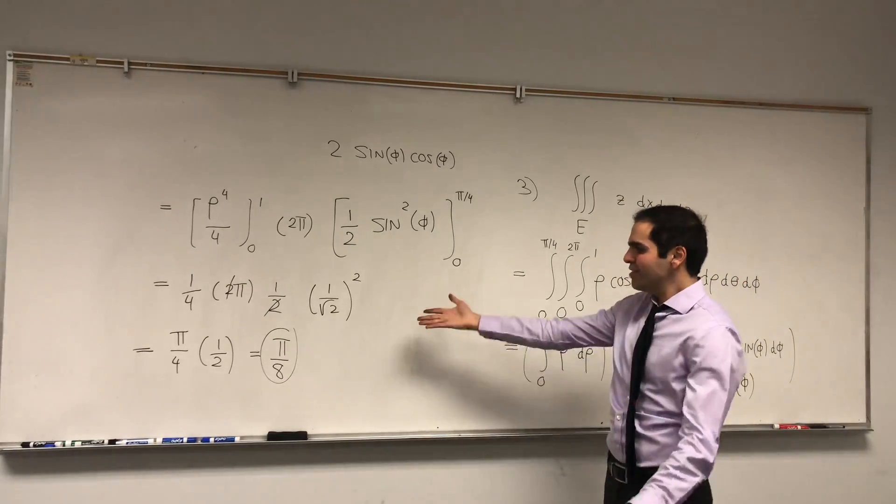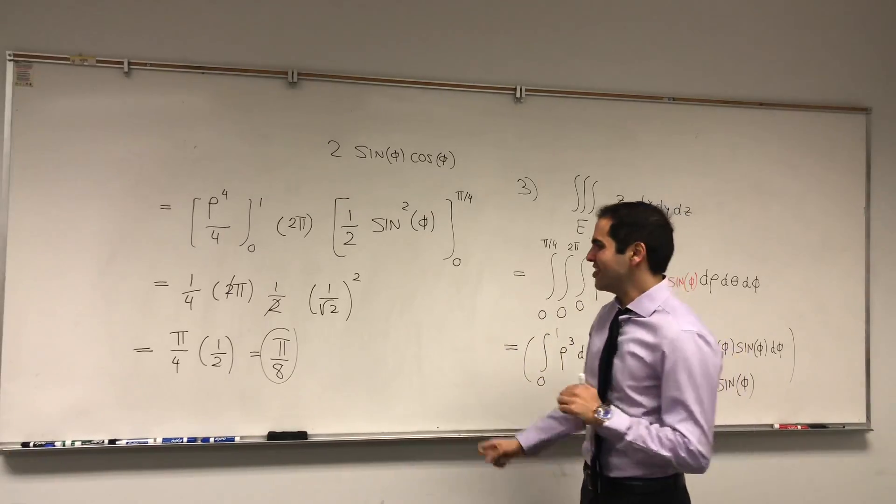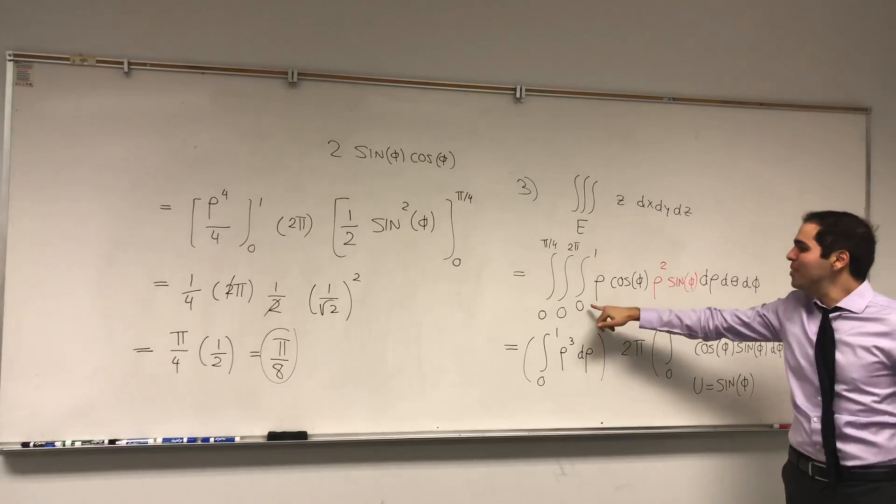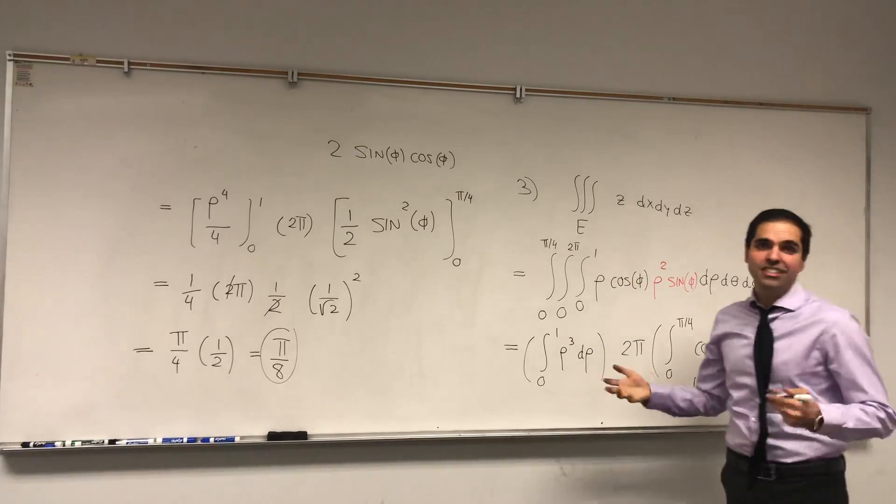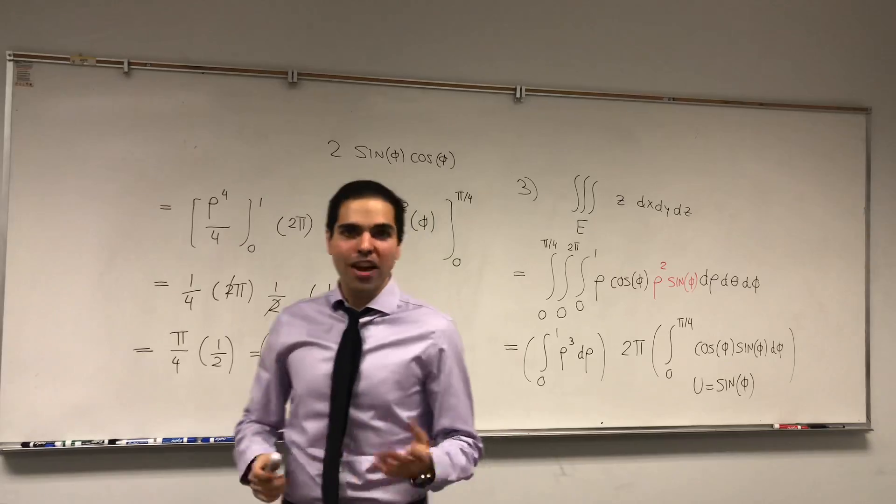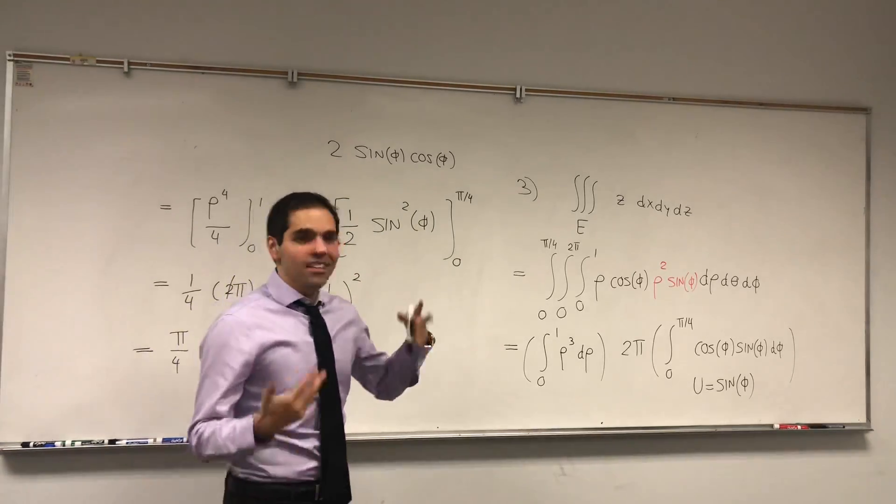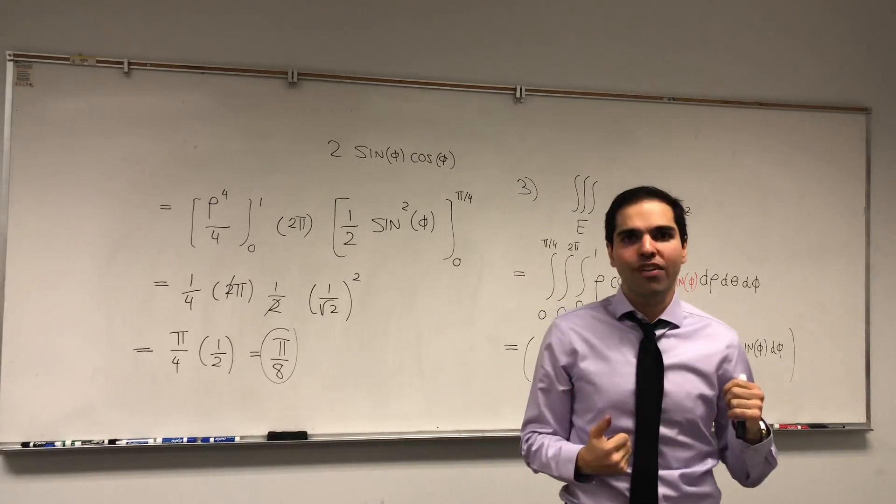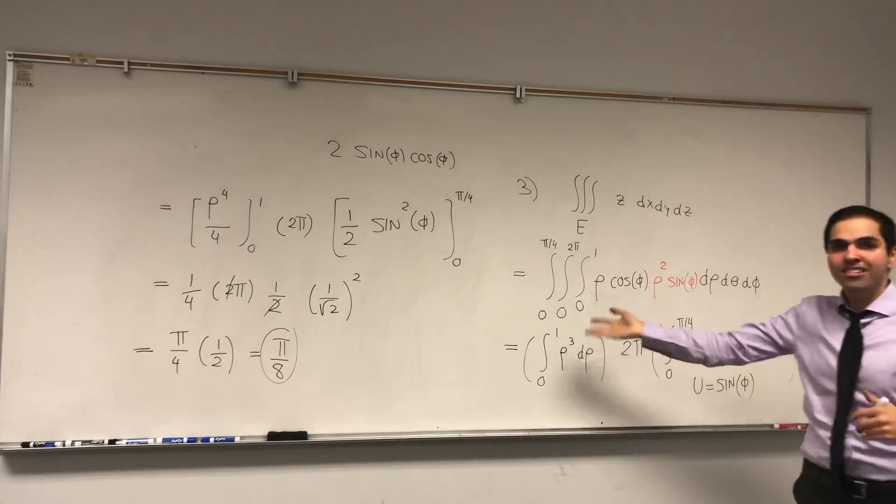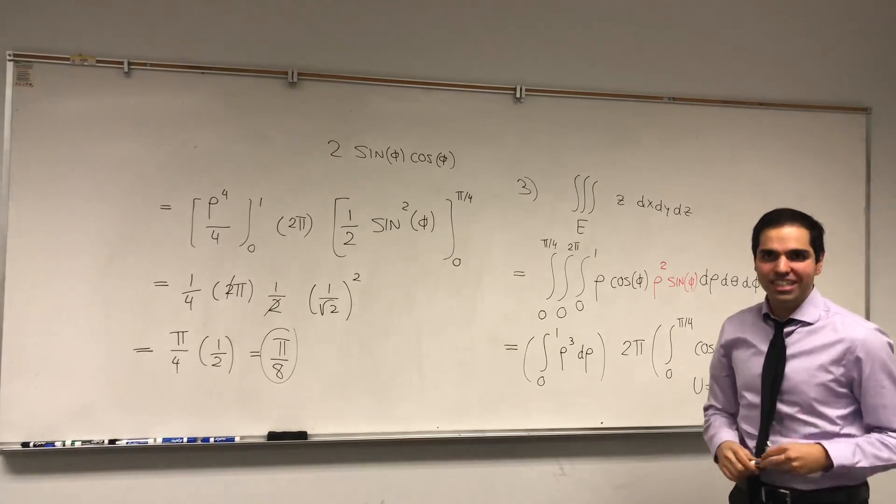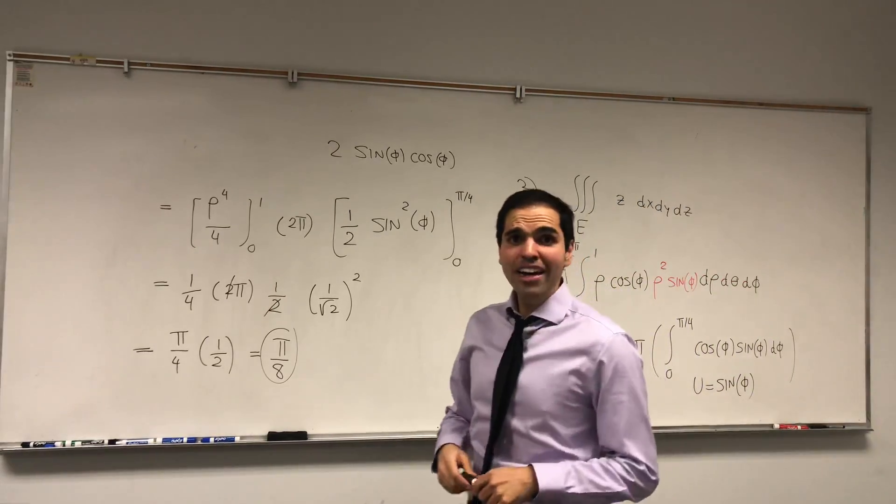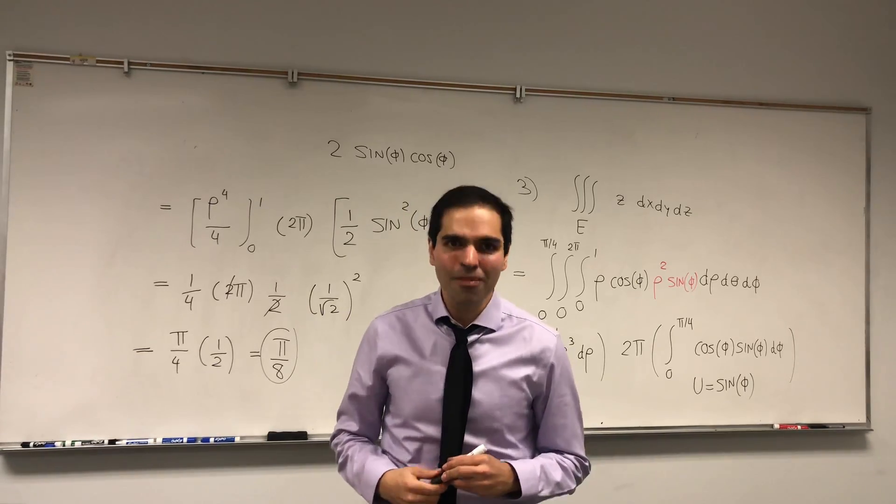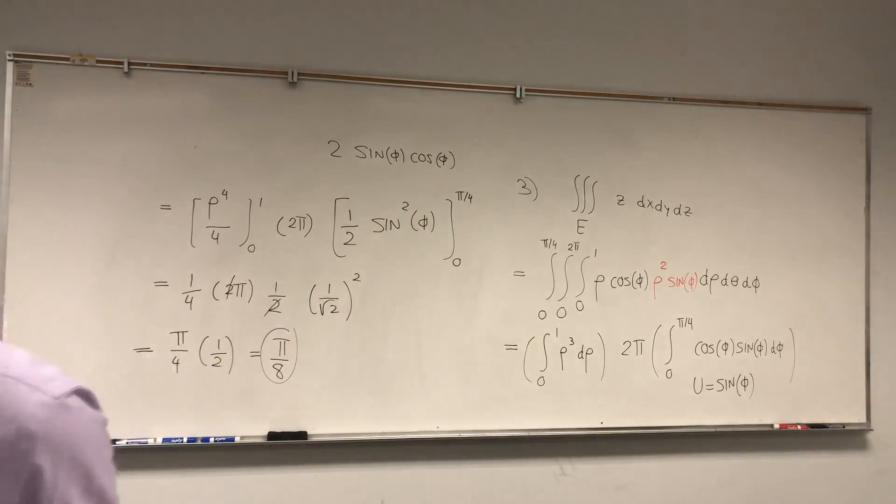And this is, again, the triple integral of the function z. And notice, this became much easier because our bounds are much easier here. So, this is one thing about spherical coordinates. It's super hard to visualize and kind of hard to find the bounds, but once you've found the bounds, everything else becomes much easier. All right, I hope you liked this. If you want to see more math, please make sure to subscribe to my channel. Thank you very much.